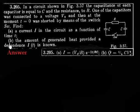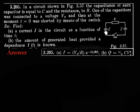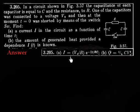Let us discuss this problem. We have a circuit with a capacitor of capacitance C, another capacitor also of capacitance C, and a resistor of resistance R. Initially, this capacitor is charged with a potential difference V0, which means initially it has a charge Q0 that is C times V0.